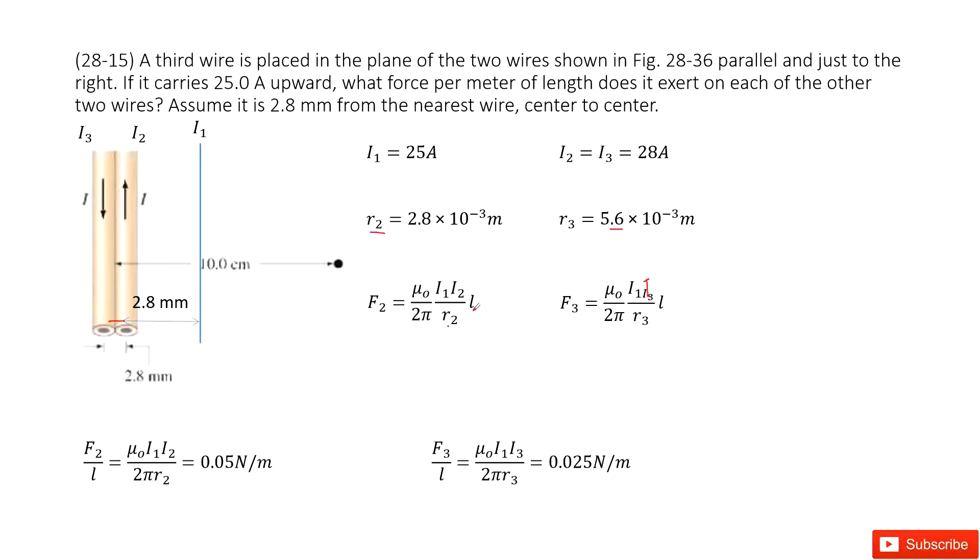Now we can see this length is the wire length for I2 and I3 for their force per meter of length. So we can just divide L on both sides. So F2 over L, we get the term that looks like this one. Input all the given quantities, you get the answer there. Similarly, F3 divided by L, you get this term. And input the given quantities, I1, I3, R3, you get the answer there. Thank you.